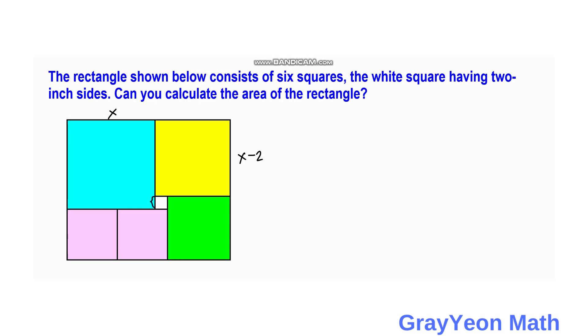And for the green square we need to subtract further another two, so we have x minus four. And this should be x minus four since it is a square. And for the lavender square